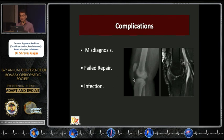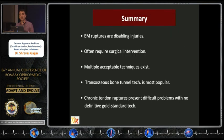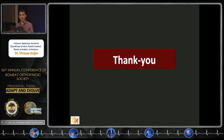Complications include misdiagnosis — be very vigilant not to miss these injuries — and failed repairs with infection, which is a very challenging problem as demonstrated on the MRI and X-ray images. In summary, these are disabling injuries often requiring surgical intervention. Multiple techniques exist, but the trans-osseous bone tunnel technique tends to be very popular and is the method I commonly use. Chronic tendon tears and re-ruptures remain a difficult problem, and unfortunately the literature is not clear about the gold standard technique.